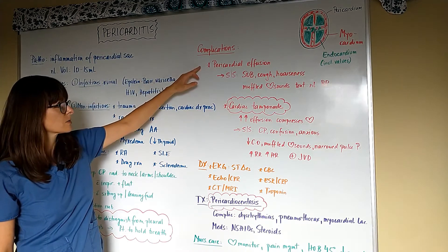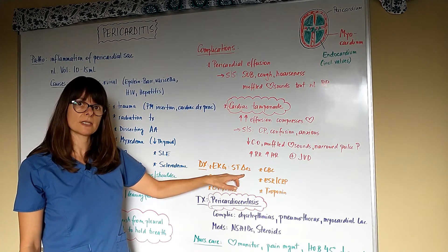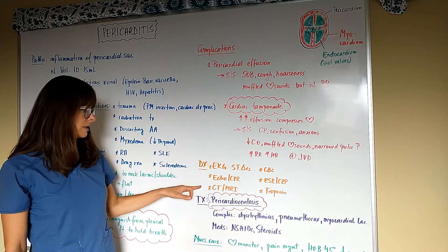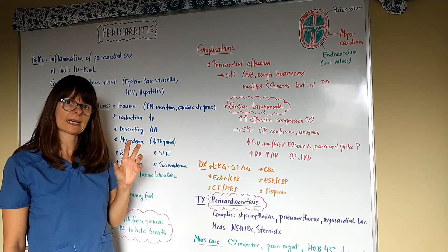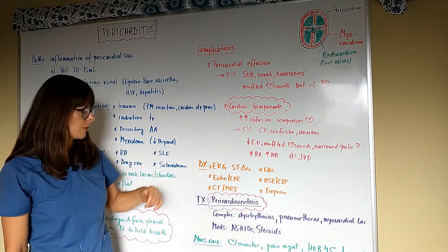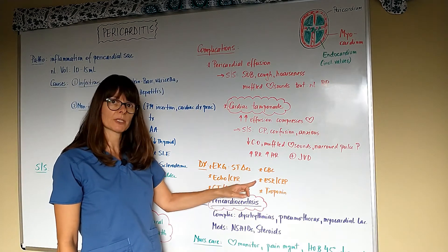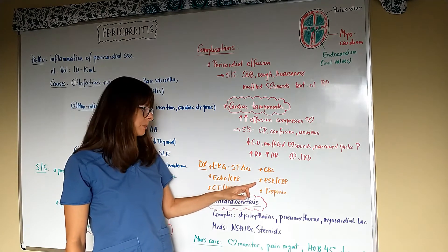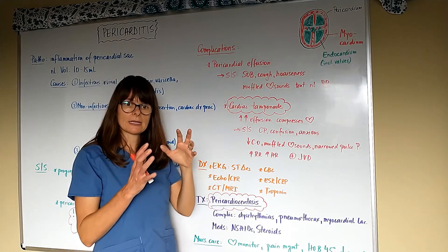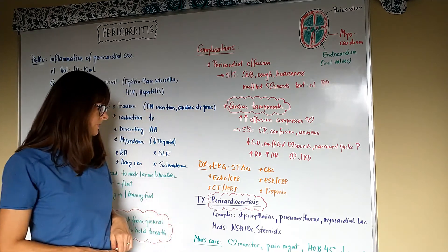Diagnostic tests for pericarditis, as well as effusion and tamponade, are EKG, which might show ST changes, echocardiogram, chest x-ray, CT and MRI imaging studies to see exactly the extent of the pericarditis, effusion, or tamponade. We will definitely want to look at CBC results, inflammatory markers ESR and CRP, as well as troponin, which might be elevated because now the myocardium is not able to contract and there might be damage to the myocardial cells.